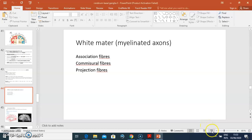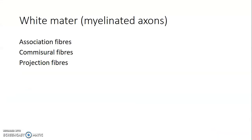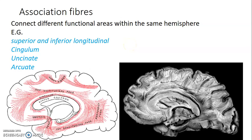White matter is made up of myelinated axons of neurons. These are divided into association fibers, commissural fibers, and projection fibers. Association fibers connect different functional areas within the same hemisphere of the cerebrum.